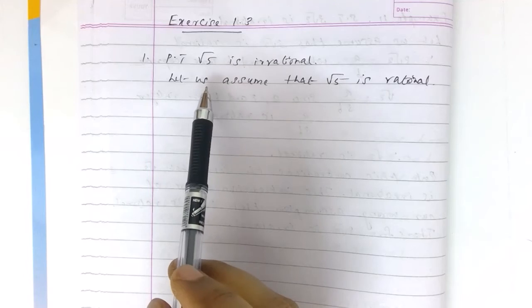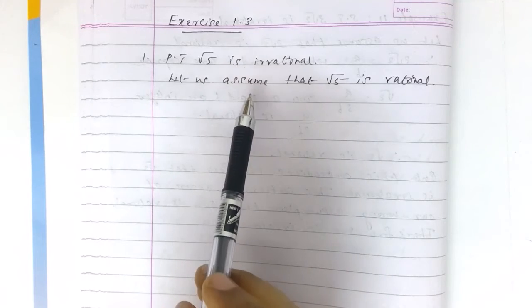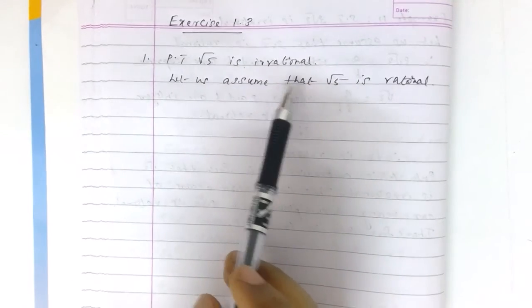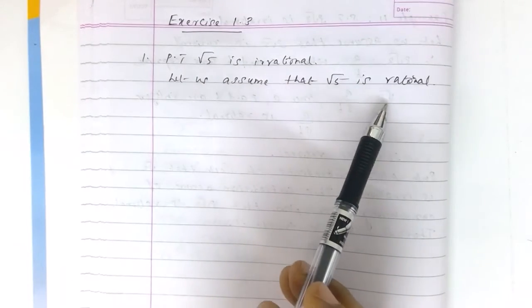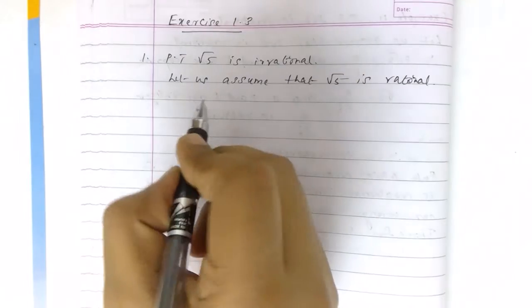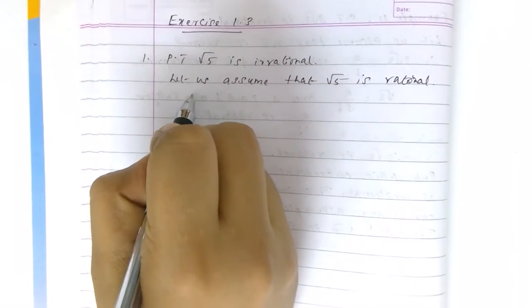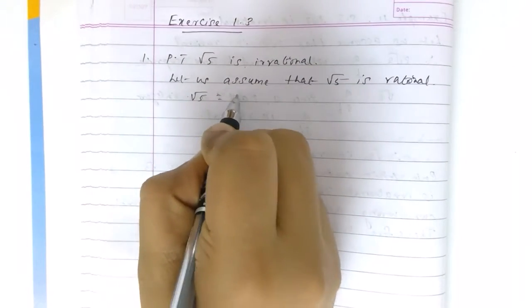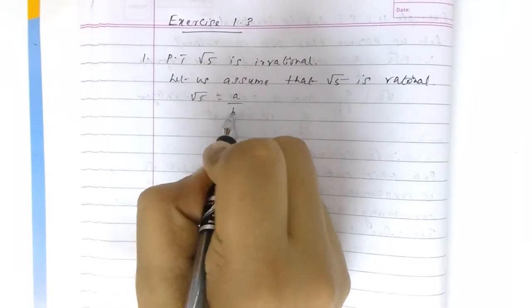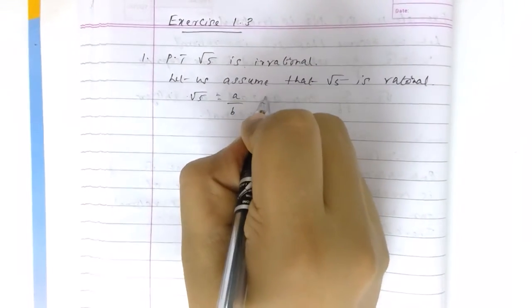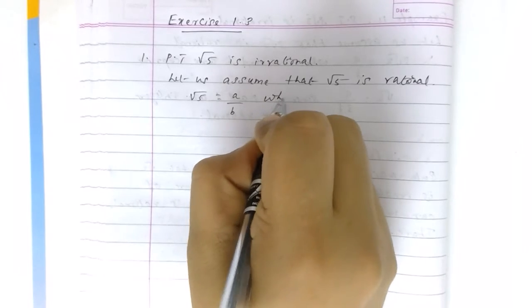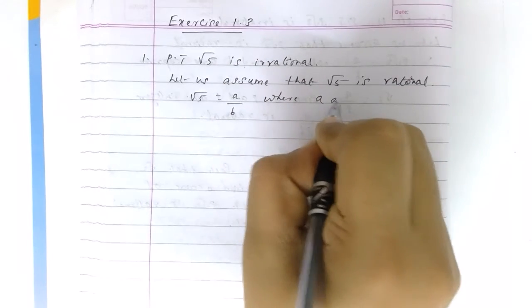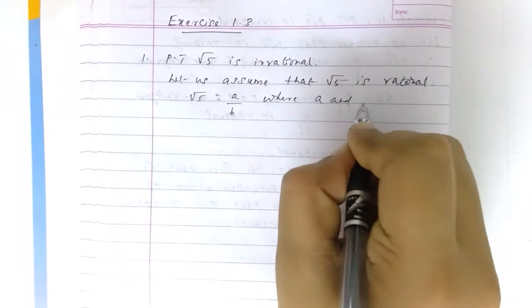What we are going to do is to assume root 5 is rational. Then root 5 is equal to A by B, where A and B are co-prime numbers.